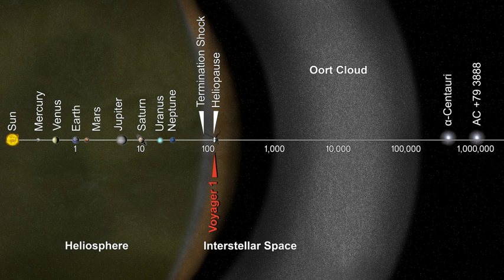Comets pass from the scattered disk into the realm of the outer planets, becoming what are known as centaurs. These centaurs are then sent farther inward to become short-period comets. There are two main varieties of short-period comet: Jupiter family comets, with semi-major axes of less than five astronomical units, and Halley family comets. Halley family comets, named for their prototype Halley's comet, are unusual in that although they are short-period comets, it is hypothesized that their ultimate origin lies in the Oort cloud, not in the scattered disk. Based on their orbits, they were likely long-period comets captured by the gravity of the giant planets and sent into the inner solar system.